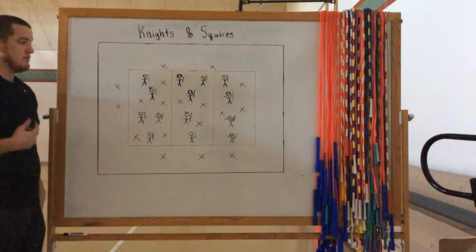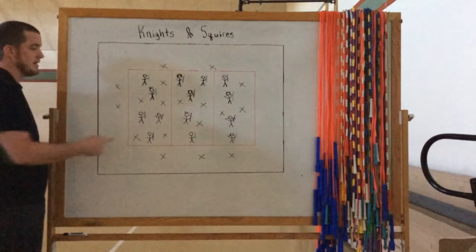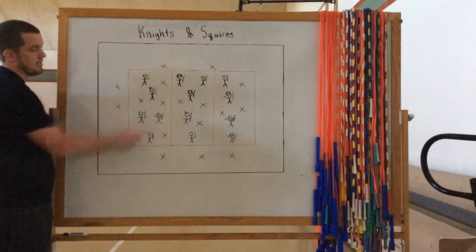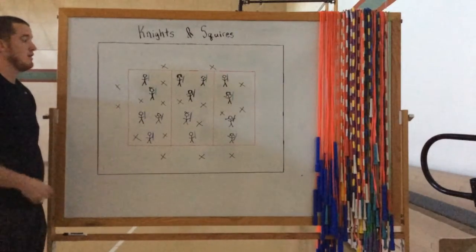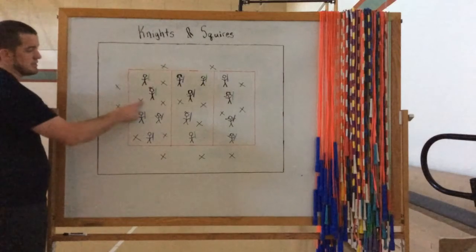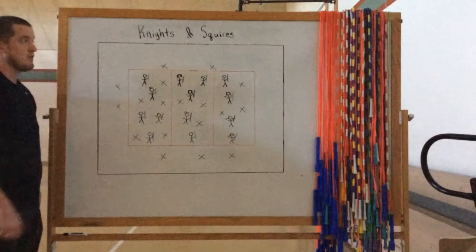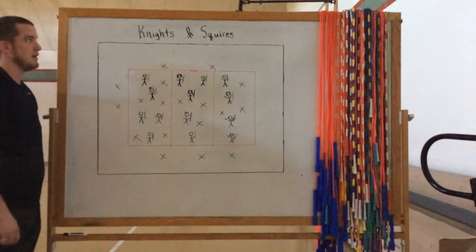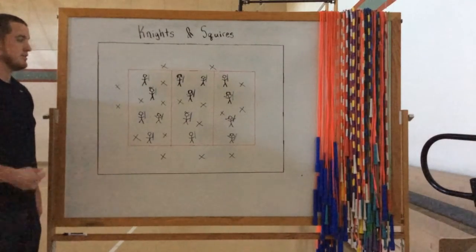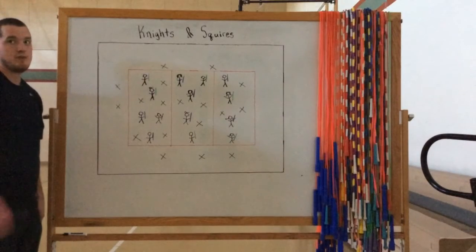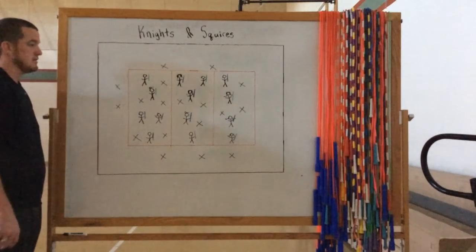How it works is half the students are going to be Knights and they're going to be standing up with half a pool noodle. The other half of the students, the X's, are going to be sitting down criss-cross and they're the Squires. You're going to have to explain what a Squire is and what a Knight is, how a Squire studies underneath a Knight. So they're waiting for their turn to be a Knight, basically.